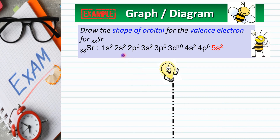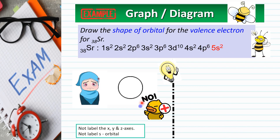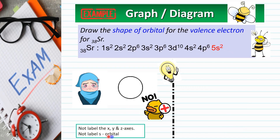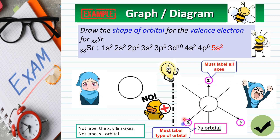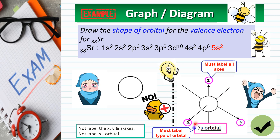This is an example of a question involving the orbital shape. The first sample answer is incorrect because it does not label the subshell and the three axes. Please remember you must label the specific subshell — that is, 5s — and the x, y, and z axes.